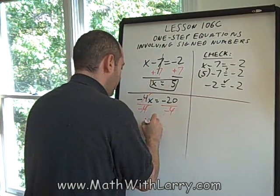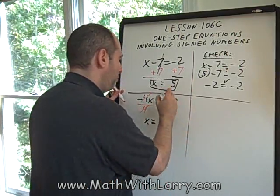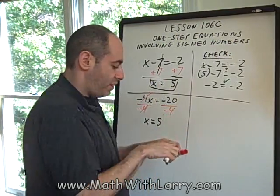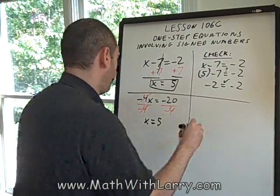So, you have to remember the rules for signed number division. A negative divided by a negative is a positive. So, these cancel. We are left with 1x, which I can just write as x. Now, again, signed number division. A negative divided by a negative is a positive. So, we have negative 20 divided by negative 4, which is positive 5.